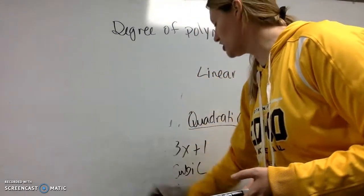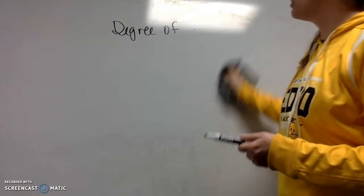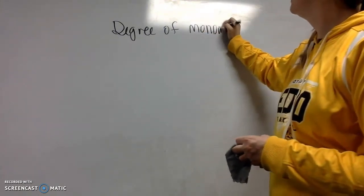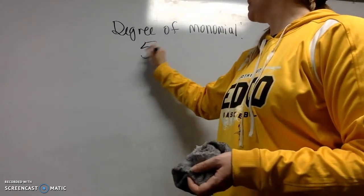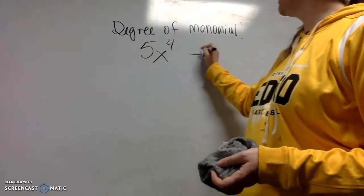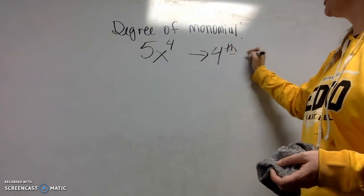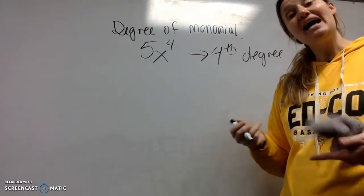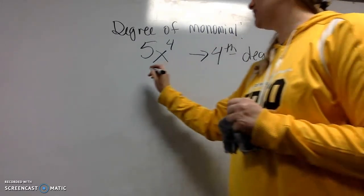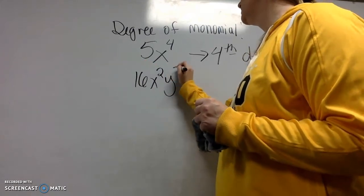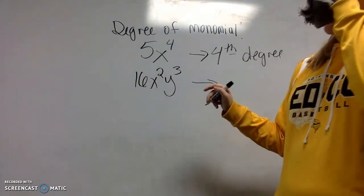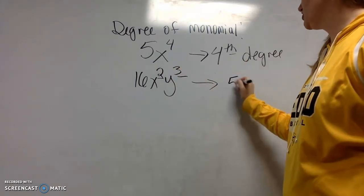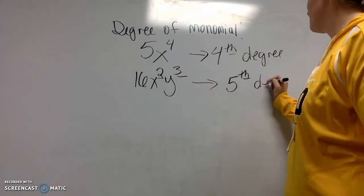So now that we've covered that, let's go back and talk degree of a monomial, because a monomial is different. Obviously, if you have only one variable, you're just going to look at that exponent, and that is the degree. But if a monomial has more than one variable, we do not look for the biggest exponent, we actually are going to add the exponents.